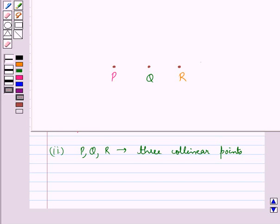As you can see, we get three line segments, which are PQ, QR, and PR.